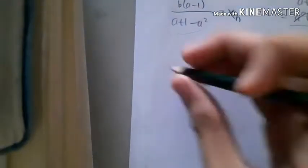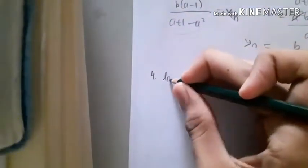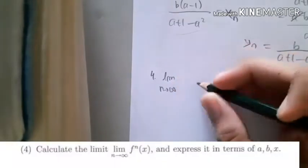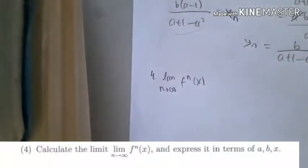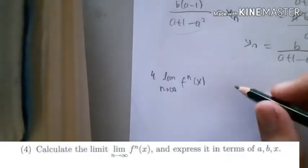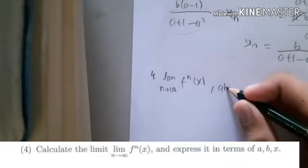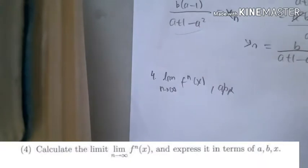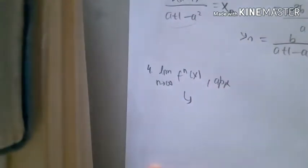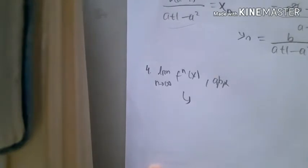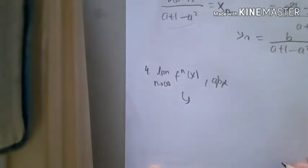Okay, so let's do number four. Number four is the limit - we have to find the limit as n approaches infinity of f^n(x), and then they say express it in terms of a, b, x. Now what is f^n(x)? We already found it in number one.